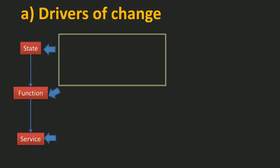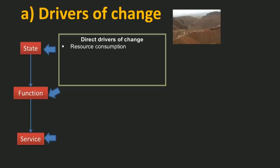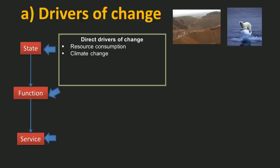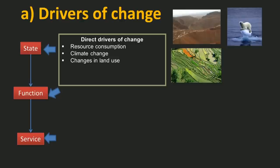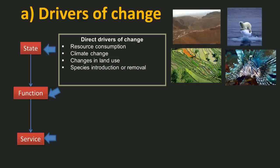Logically, there are direct drivers of change that affect the state and function of a system. These include resource consumption, climate change — very important for changing the states of systems — and changes in land use, which affect both land and ocean through problems like eutrophication. There are also species introductions and removals, such as lionfish as an invasive species and its impact on ecosystem services.